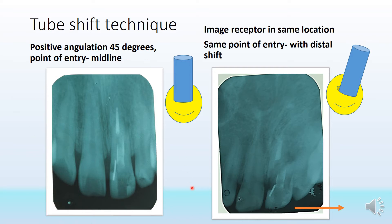For a normal maxillary incisor area, the point of entry would be at the midline, through the center of the nose, at about 45 degrees positive angulation. When using the shift technique, another radiograph is taken with the film kept in the same location covering the same teeth and landmarks, but the point of entry is shifted slightly distally so the tooth is viewed from a different angle.